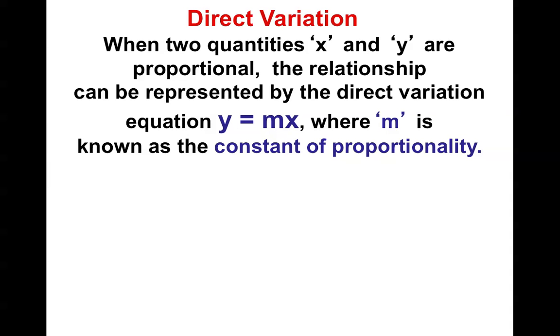Direct variation says that there is a relationship between x and y that is proportional. The relationship is represented by the equation y equals mx, where m is known as the constant of proportionality. Also, m is also known as the slope.